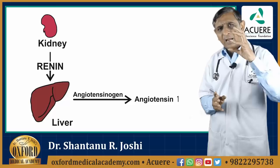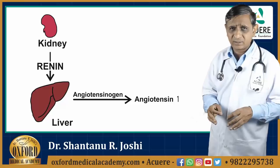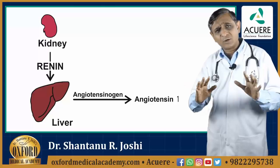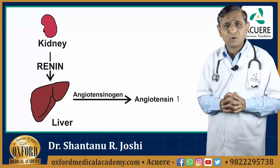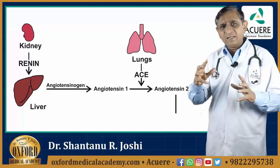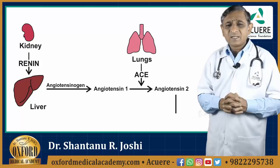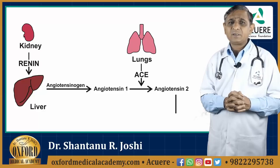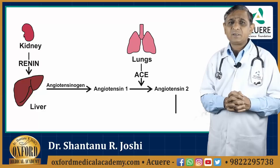This renin stimulates the liver and converts angiotensinogen from the liver to angiotensin-1. Angiotensinogen is present in the liver. Renin stimulates the conversion of angiotensinogen to angiotensin-1. Angiotensin-1 is an inactive substance — it does not have any pharmacological action — but in the lungs, angiotensin-1 gets converted into angiotensin-2.